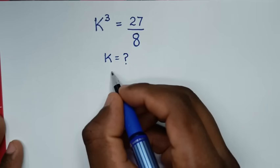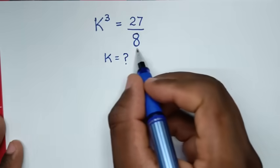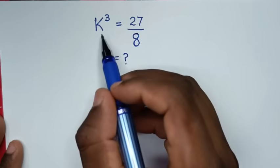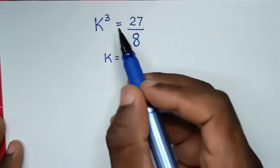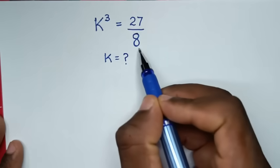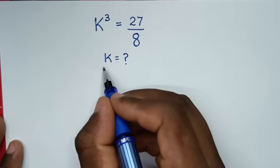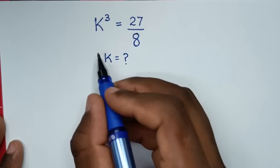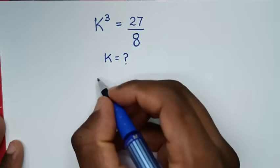Hello, you are welcome to solve this math problem, which is k power 3 is equal to 27 over 8. We need to find the values of k from this equation.